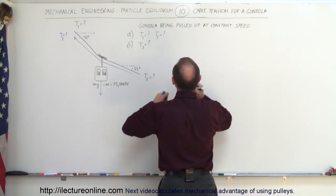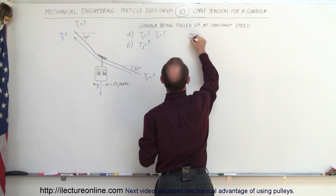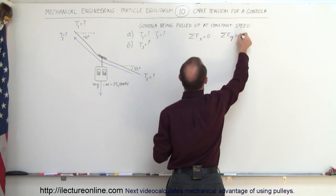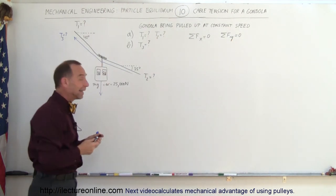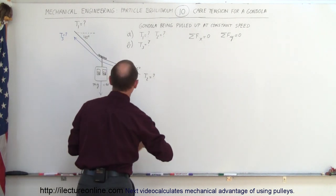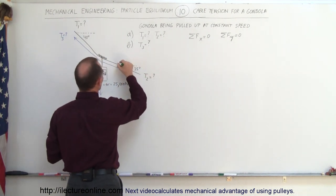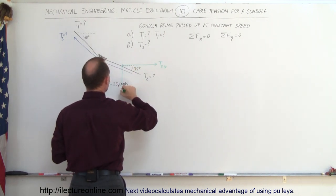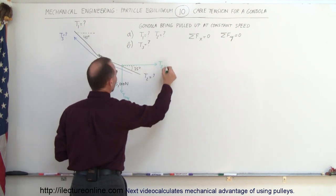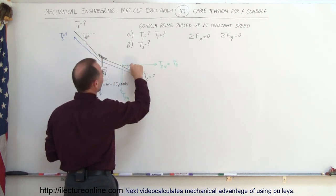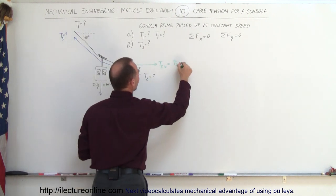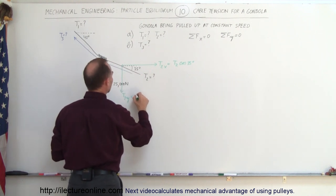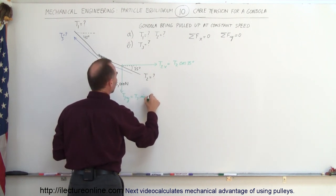The sum of the forces in the x direction should add up to zero, and the sum of the forces in the y direction should add up to zero. We need to find the x and y components of both tensions. So T2 in the x direction equals T2 times cosine of 35 degrees, and T2 in the y direction equals T2 times sine of 35 degrees.